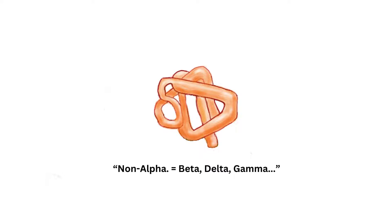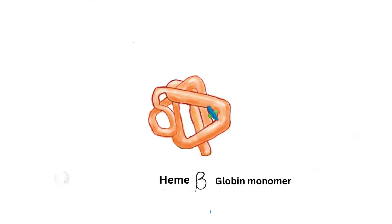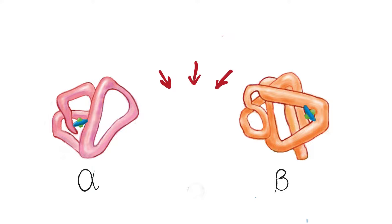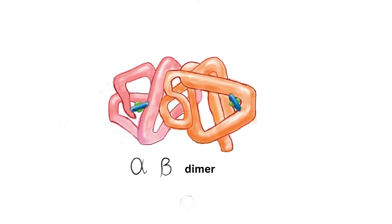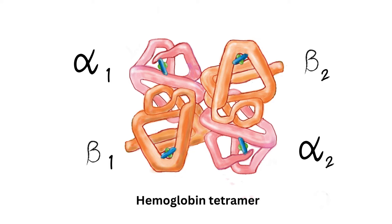Non-alpha globin chains include beta, delta, and gamma. Heme plus the beta globin chain form a heme-beta globin monomer. The heme-alpha polypeptide chain joins with the heme-beta polypeptide chains to form an alpha-beta dimer. Two alpha-beta dimers come together to form a hemoglobin tetramer — the complete hemoglobin molecule alpha-2 beta-2 — which is the predominant hemoglobin in adults, known as hemoglobin A.